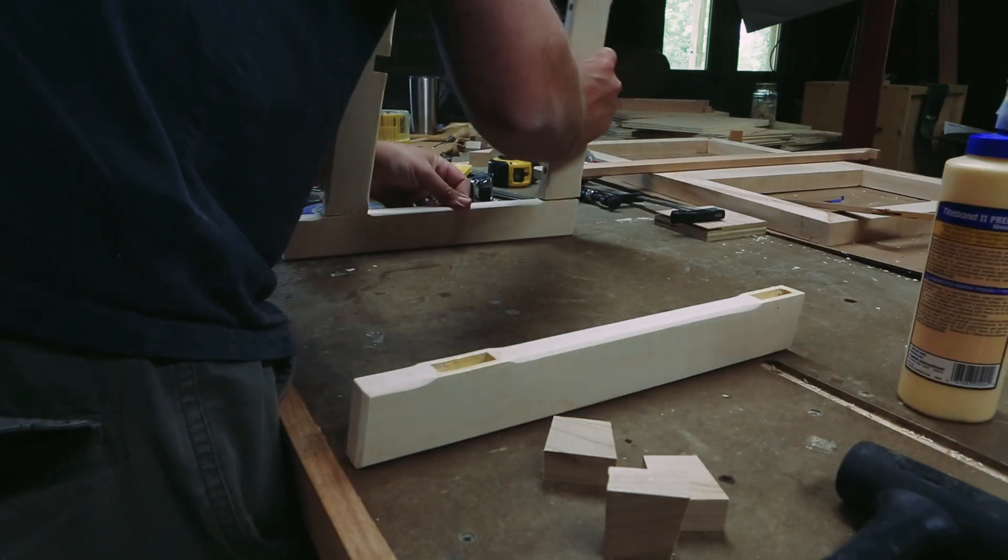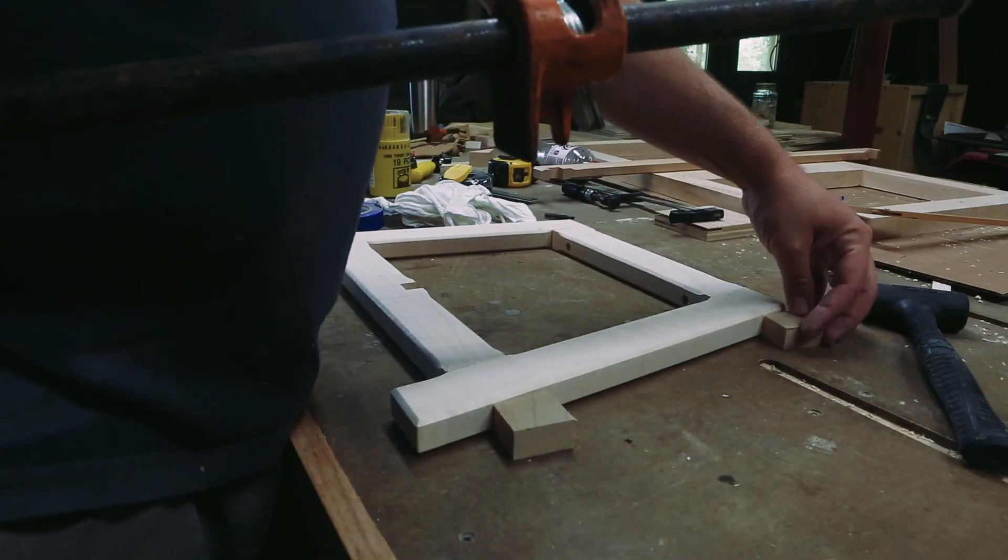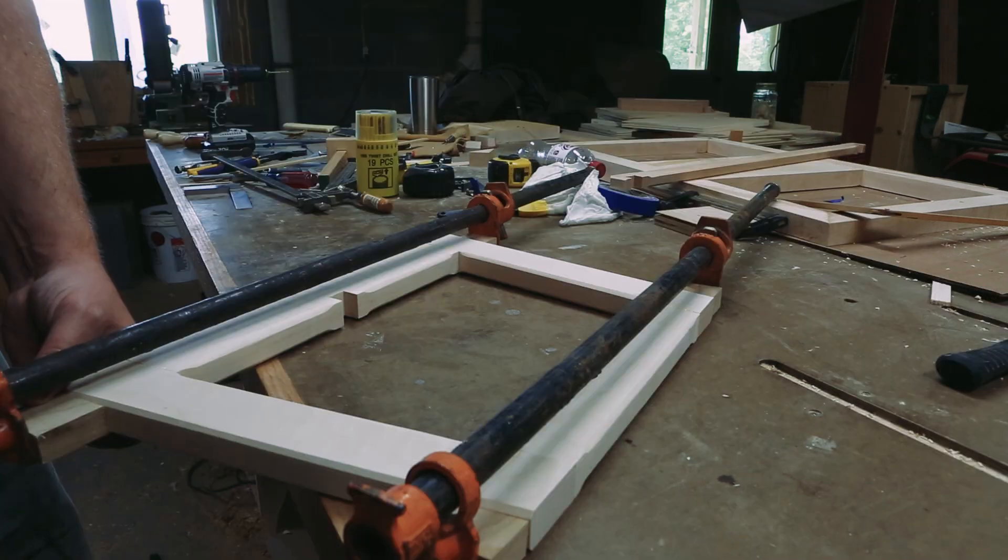I cut some scrap at nine degrees to help with clamping pressure. To reinforce the miter joints, I used the same jig for the tenons.